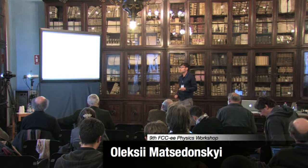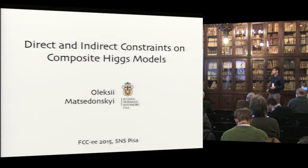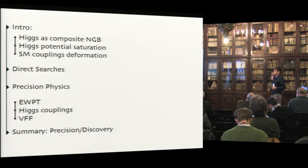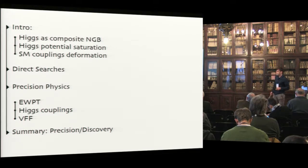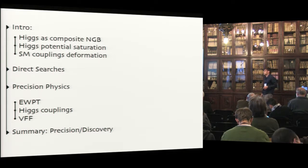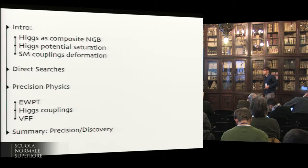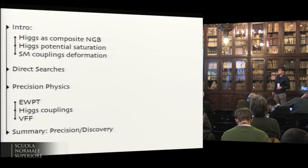This talk will overlap a bit with the previous one, but will be more general and cover a larger number of observables and their interplay. I will introduce the composite Higgs again, repeating some things but with emphasis on different aspects. Then I will discuss the principal constraints on composite Higgs, in particular from direct searches at the LHC and future precision physics at TLAB, trying to understand what is more important or complementary.